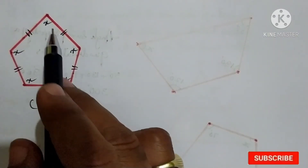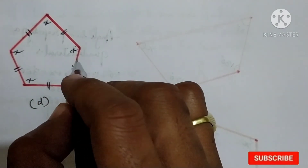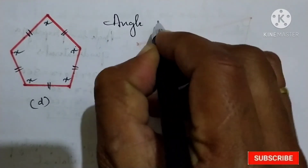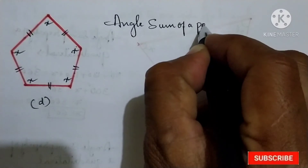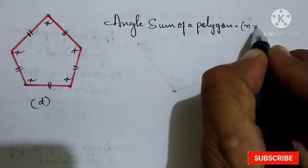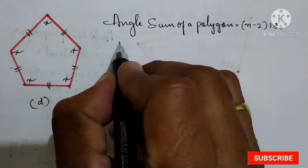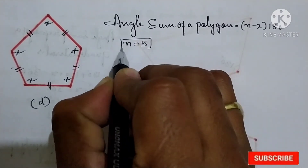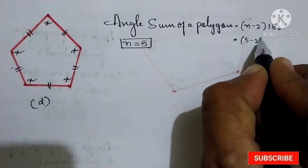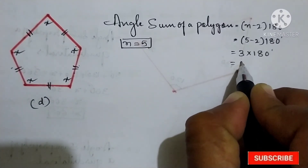Now the D figure — in this figure x, x, x are given here, so all the angles are equal. Here we should find the x value. We know the angle sum of a polygon: n minus 2 into 180 degrees. How many sides are here — 1, 2, 3, 4, 5 sides — so n is equal to 5. Substituting: 5 minus 2 into 180 degrees is 3 into 180 degrees, which is equal to 540 degrees.